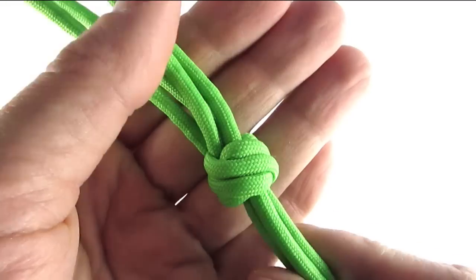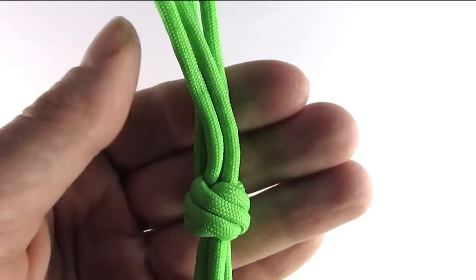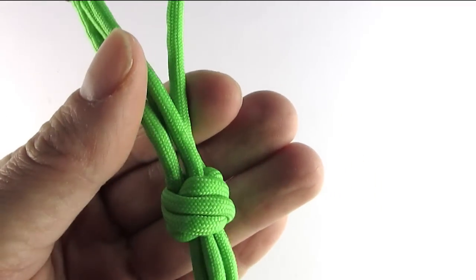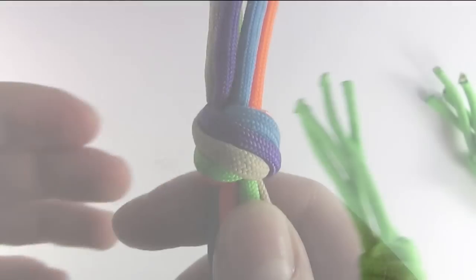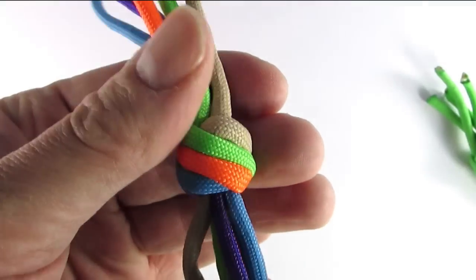This is the one color version of the Matthew Walker knot and as you can see the cords are lined up one next to the other in a very neat way. The multi-color version does look quite nice as well.